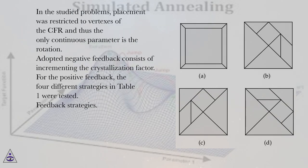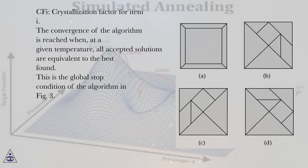In the studied problems, placement was restricted to vertices of the CFR and thus the only continuous parameter is the rotation. Adopted negative feedback consists of incrementing the crystallization factor. For the positive feedback, the four different strategies in Table 1 were tested. Feedback Strategies: CFI, Crystallization Factor for Item I.